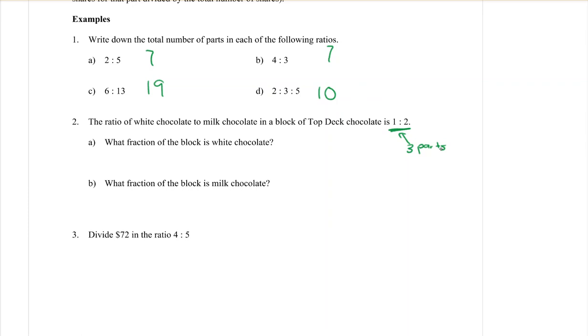If I want to know what fraction of the block is white chocolate, which number is white chocolate: the one or the two? Looking here, the ratio of white chocolate to milk chocolate, the white is going to be the first one. So there is one part white chocolate out of the total of three parts.